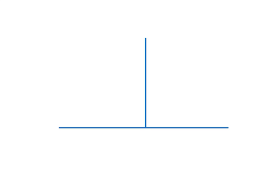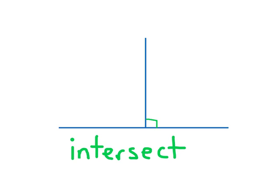When two lines or two edges meet, we say that they intersect. Where a horizontal line intersects with a vertical line, they form a right angle. So, we say that these two lines are perpendicular to one another, and this right angle is shown with this little square in the corner.